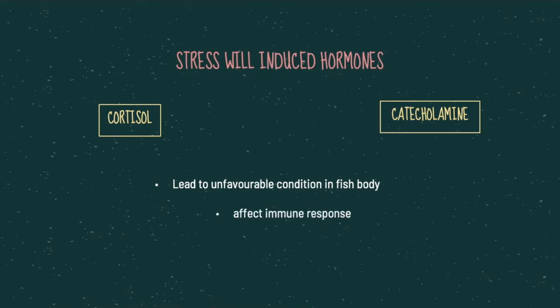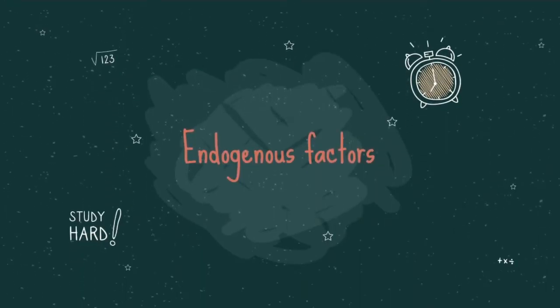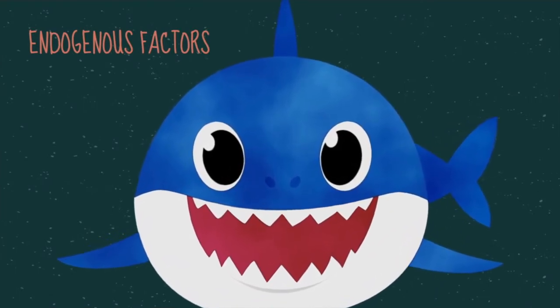The release of cortisol and catecholamine will lead to unfavorable conditions in the fish body. Now let's talk about endogenous factors that affect the fish immune system — let's take a look inside the fish.